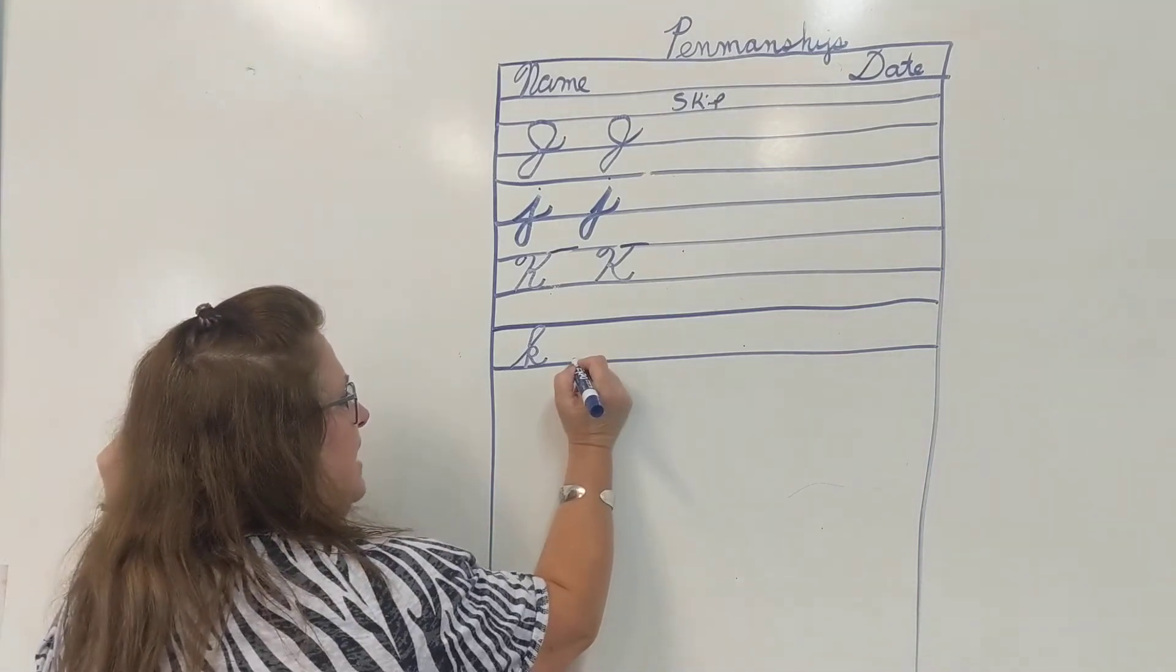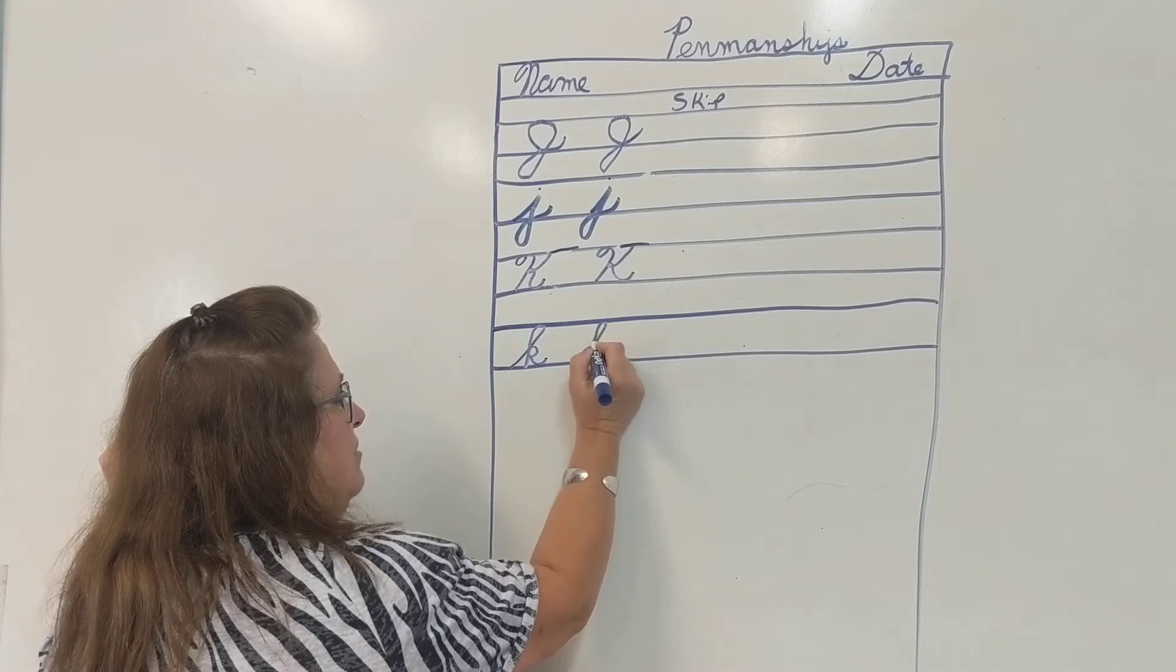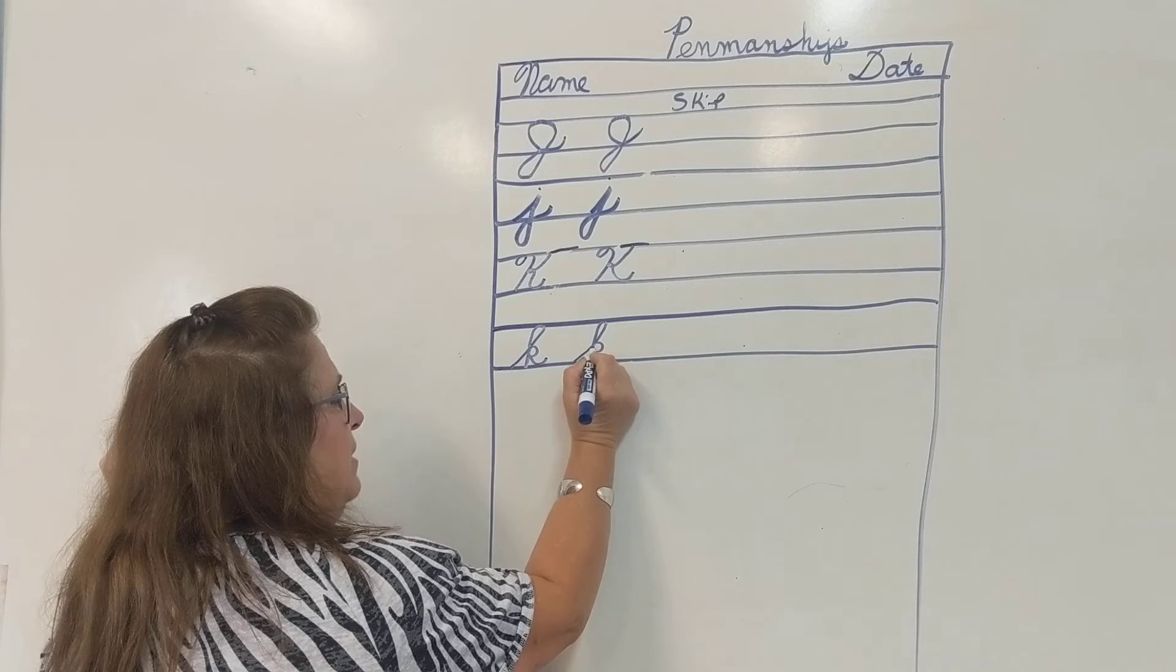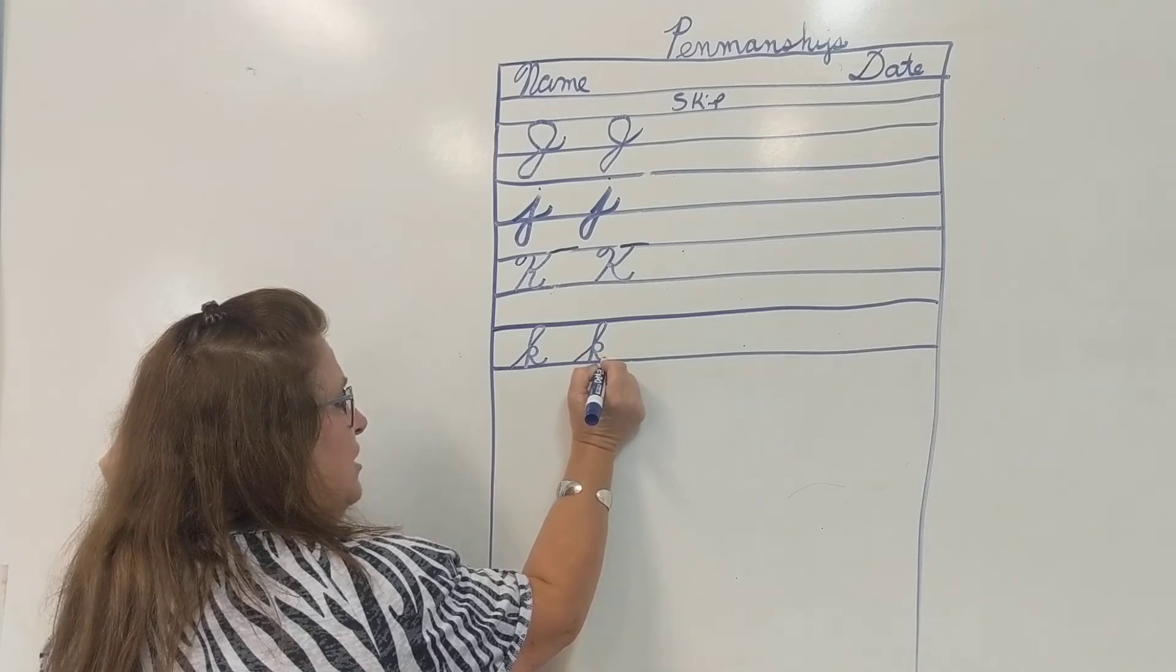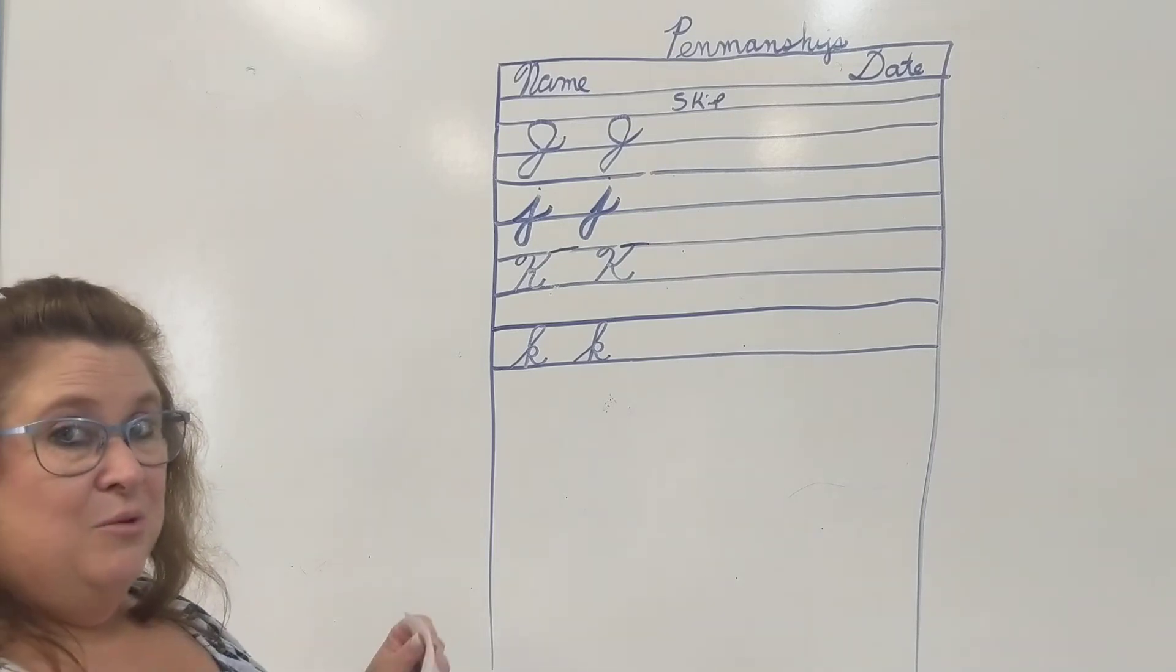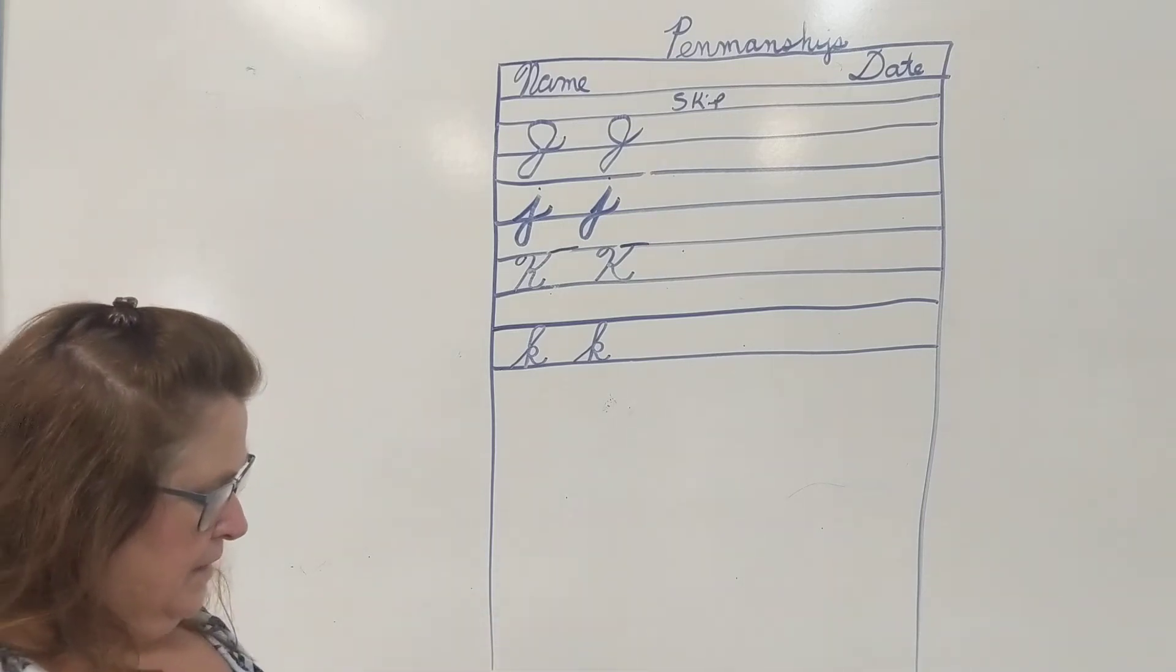Don't you guys think those K's are pretty? Up and around and down. Retrace back up. Close it up. Slant out and curve up with a smile. So, you will make me five lowercase K's. All right.